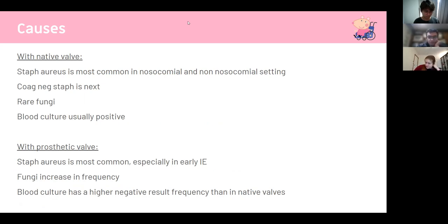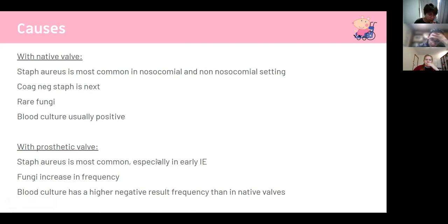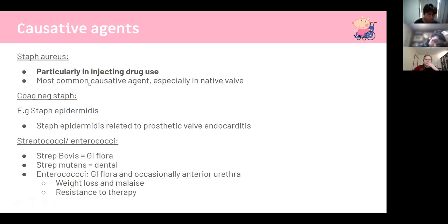Nosocomial means hospital-acquired infection. With native valves, Staph aureus is the most common causative organism, followed by coagulase-negative Staph. Fungi are very rare in native valve infections. With prosthetic valves, Staph aureus is still most common early on; fungi increase substantially in late endocarditis and blood cultures more often return negative results compared to native valves.